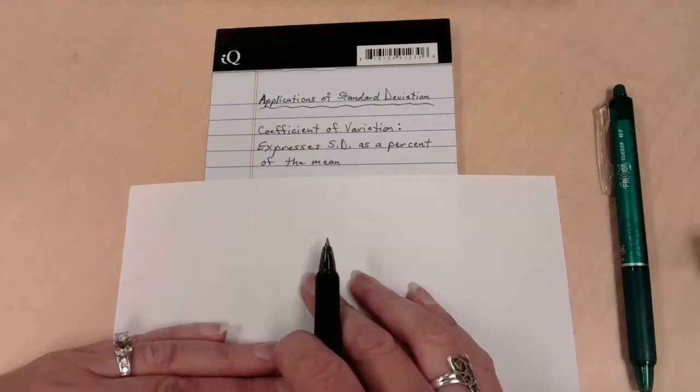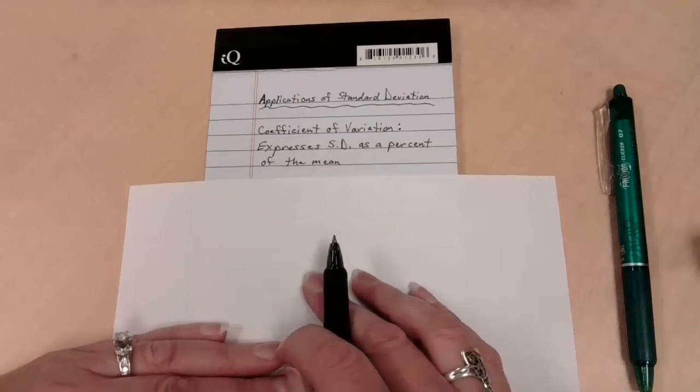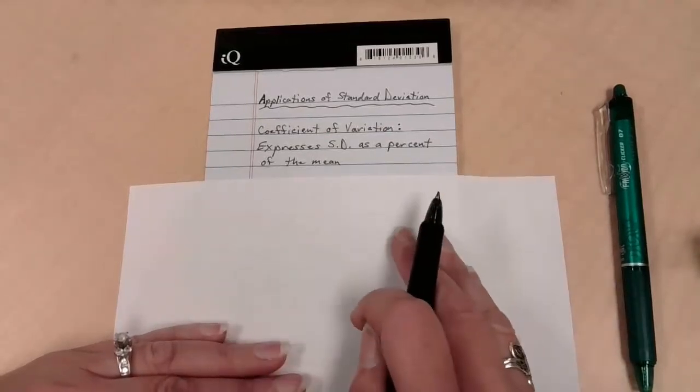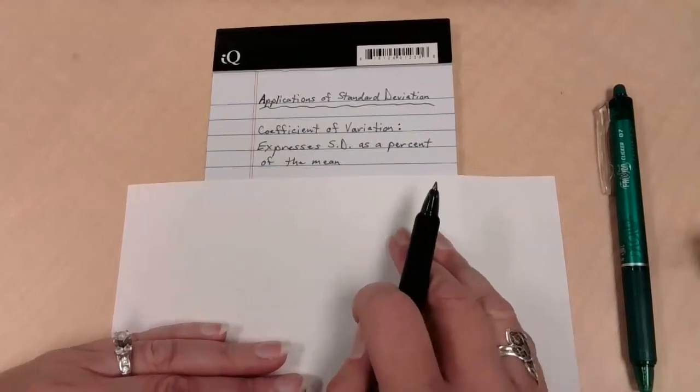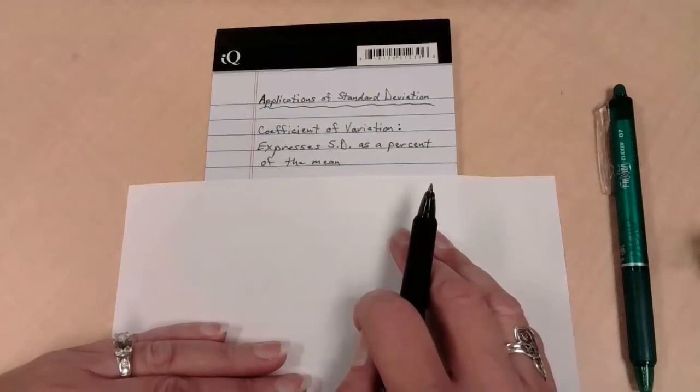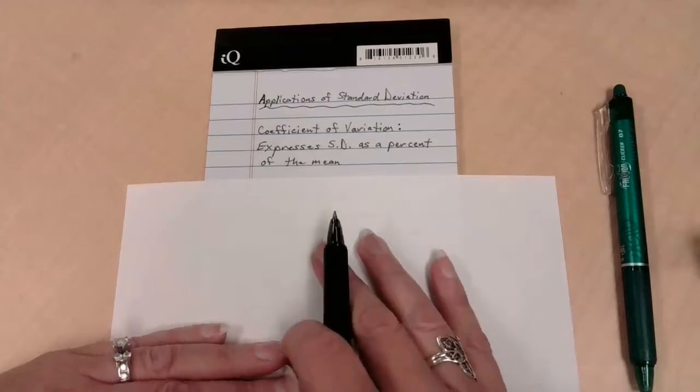Standard deviation and mean both are based on units of some kind. And if I'm looking at two different sets of data, and I've got the variation for one and the variation for the other, it's hard sometimes with units to compare between populations and get a good comparison.